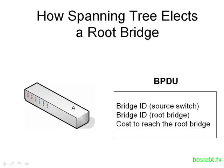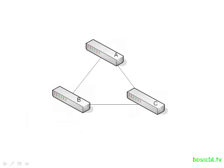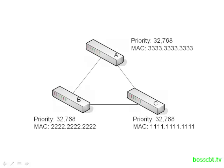Now let's put this all together and see the whole process in action. Here's our sample network. Let's start off by looking at the values of the Bridge IDs for each switch. We're going to use the default value for the priority portion, so they're all the same — 32768. The next portion is the MAC address, and obviously that's a unique value. So we combine these for each switch and we have the Bridge ID. Before we can elect a winner, let's understand two rules about the election process.